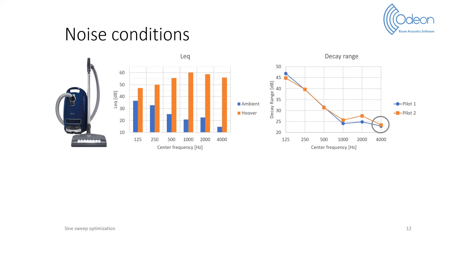At 4 kHz, the decay range decreases, which is probably due to a lower output power of the source in this band. In addition, the decay range estimation is overall repeatable, although we see occasional differences between the two pilot measurements up to 3 dB, for instance at 2 kHz. You should also note the wide range of values from 23 dB to 47 dB.